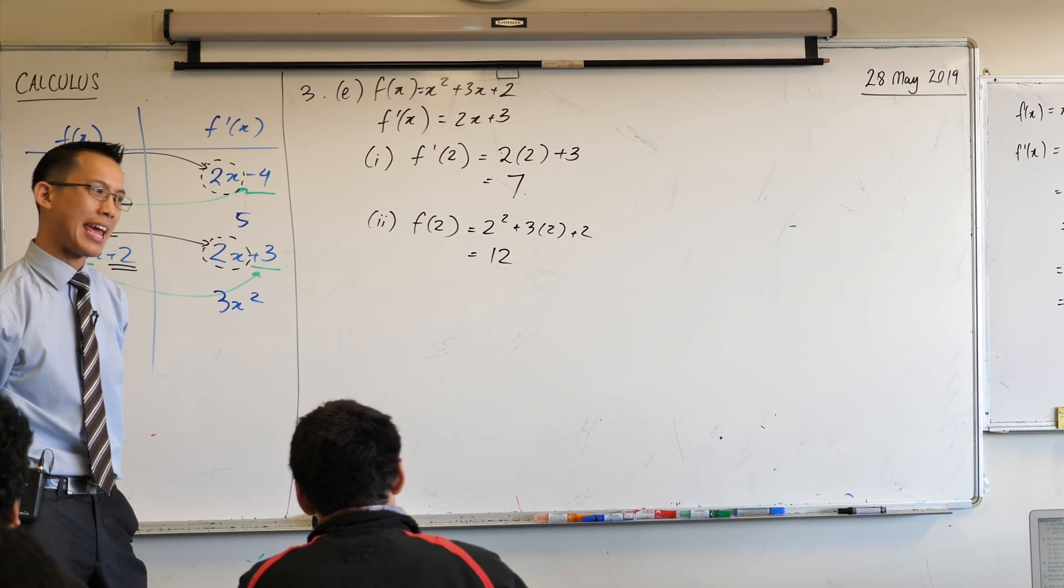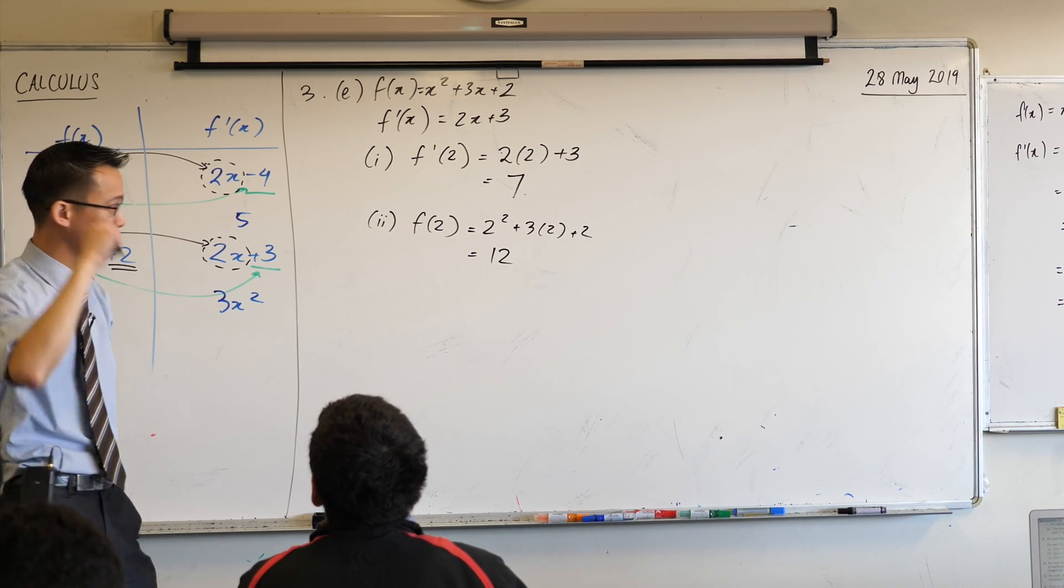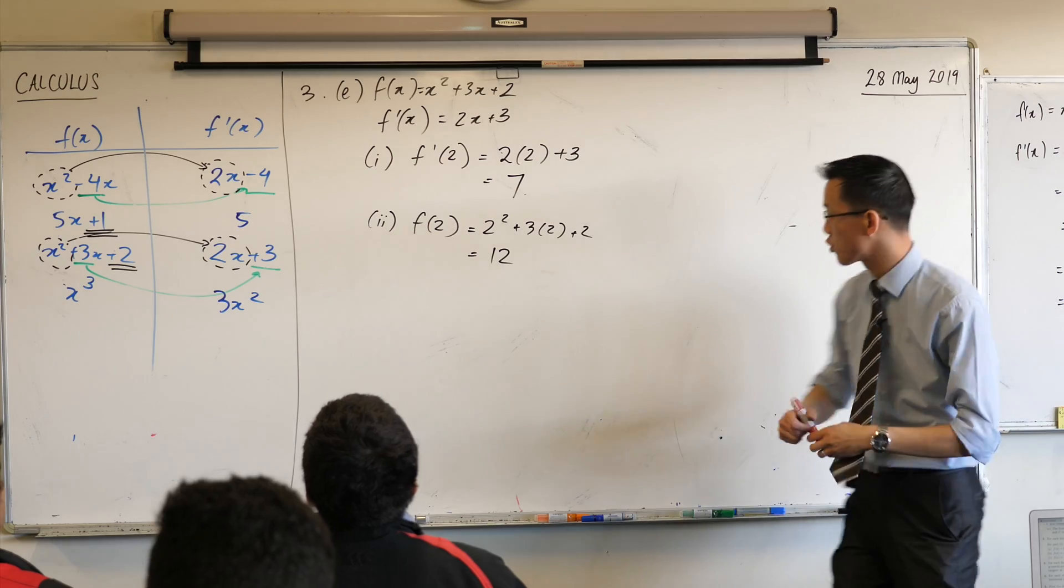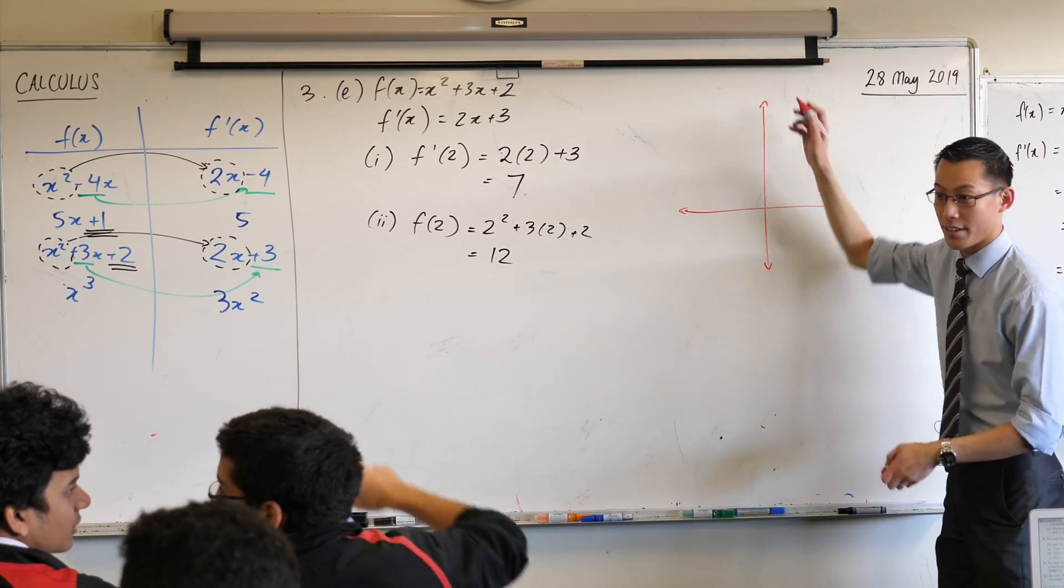Find the equation of the tangent at P. Okay, now think about this, right? At this point, it will really help to have a very rough sketch. Okay, so let's draw ourselves a Cartesian plane.